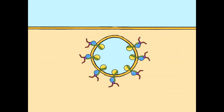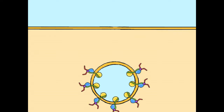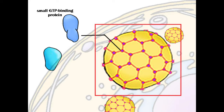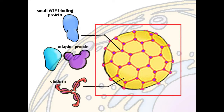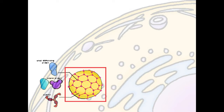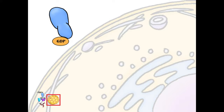Dynamin functions by assembling as a ring around the rim of the invaginated pit and undergoing a conformational change that allows the invaginated pit to break away from the plasma membrane to become an independent clathrin-coated vesicle. Receptor-mediated endocytosis by a clathrin-coated pit is the major mechanism by which cells internalize extracellular ligands and regulate cell surface receptor traffic. Clustering of the LDL receptor may result from weak protein-protein interactions relying on the cooperative behavior of multiple proteins in the clathrin lattice, or may require a novel adaptor molecule.